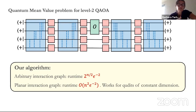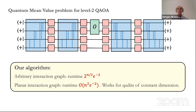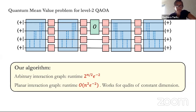Sergei, can I ask a question? You're saying if the interaction graph is three-dimensional you still have a polynomial algorithm? No — we only have a polynomial algorithm for planar graphs. A three-dimensional lattice is very non-planar.